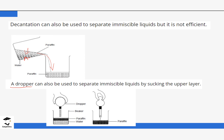Another alternative is using a dropper. You pick up a dropper and suck the top layer — for example, with paraffin and water, you bring the dropper and pick the top layer and place it in another beaker. This process may be better than decantation, but it takes a lot of time. For separating a very large amount of mixture on a large scale it is not practical, but on a small scale it is somewhat better than the decantation method.